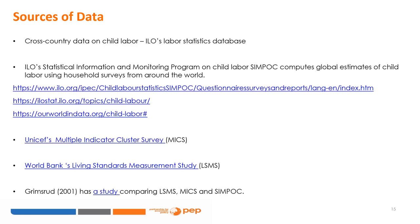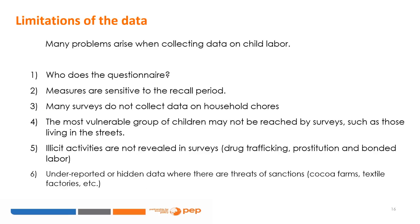The main sources of data on child labour are from the International Labour Organization (ILO), UNICEF, and the World Bank, but there are also countries' household surveys with questions regarding the work of children, number of hours worked, and kinds of activities. The ILO's SIMPOC computes global estimates of child labour using household surveys around the world. There is also UNICEF's Multiple Indicator Cluster Survey (MICS) and the World Bank's Living Standards Measurement Study (LSMS). Bjorn Grimsrud (2001) has an interesting study comparing data from LSMS, MICS, and SIMPOC.